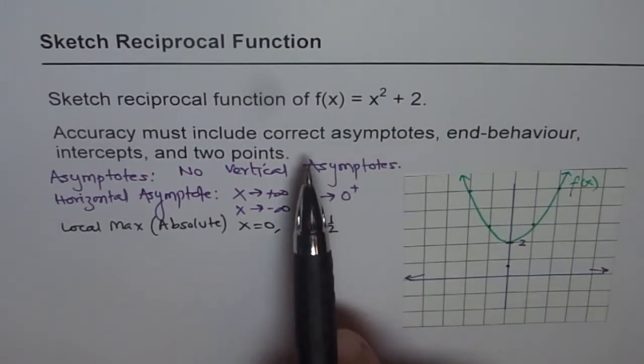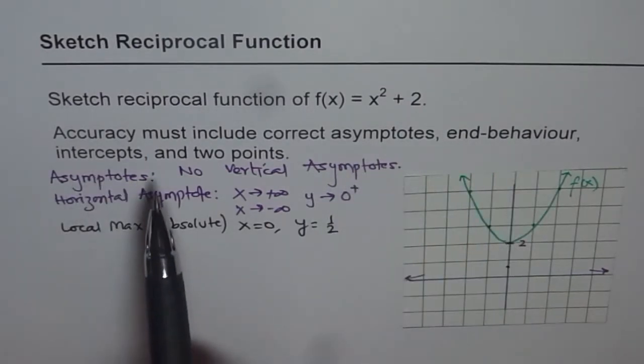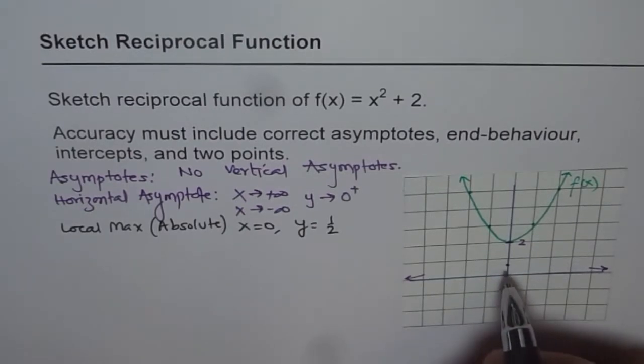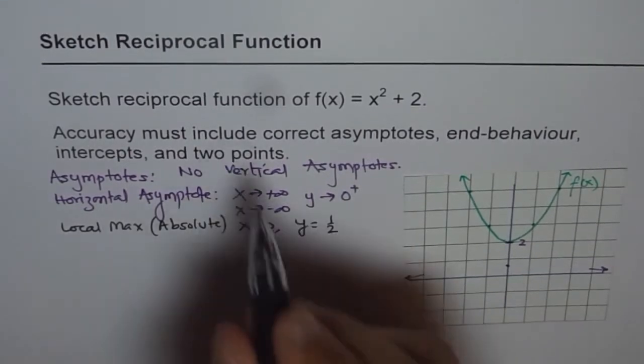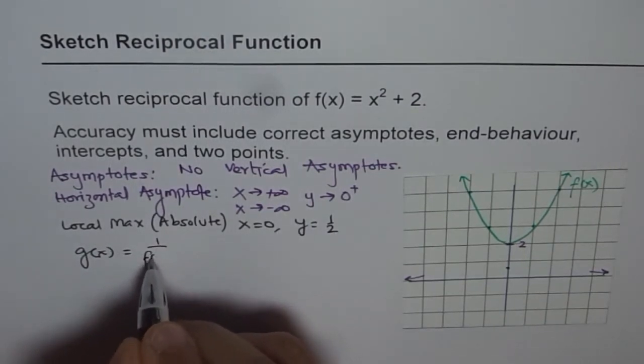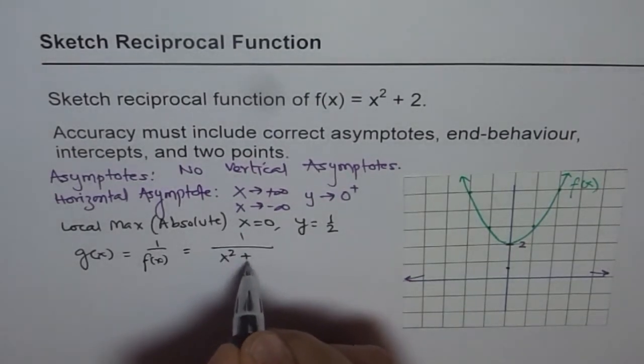So we have done asymptotes and behavior, intercepts. There are no intercepts, and any two points. Now to get more than this point, what we should do is we should write our function now, which is g(x) = 1/f(x), which is 1/(x² + 2).